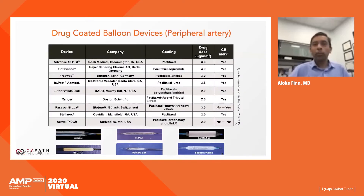Drug-coated balloons are commonly used for above-the-knee peripheral artery disease. They all have something in common: they all have a paclitaxel coating with different excipients, and the paclitaxel dose range is approximately two to three micrograms per millimeter squared.